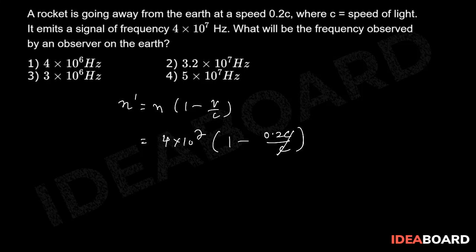c cancels out, which is equal to 3.2 × 10^7 Hz, so that option 2 is the correct option.